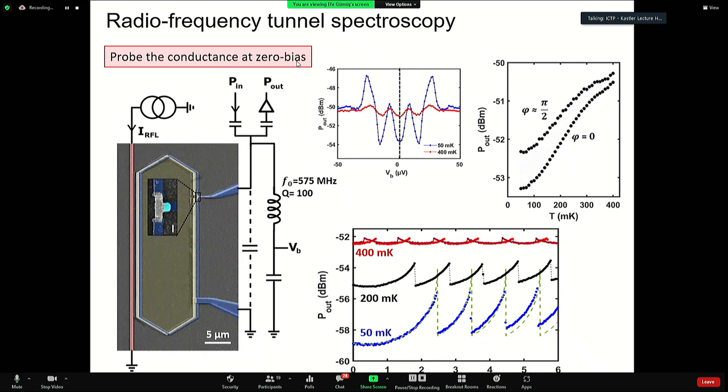The other thing is our transmission line is not superconducting. If you put a step function, you're introducing also heat to your device, which we observe as an offset in the measured power.